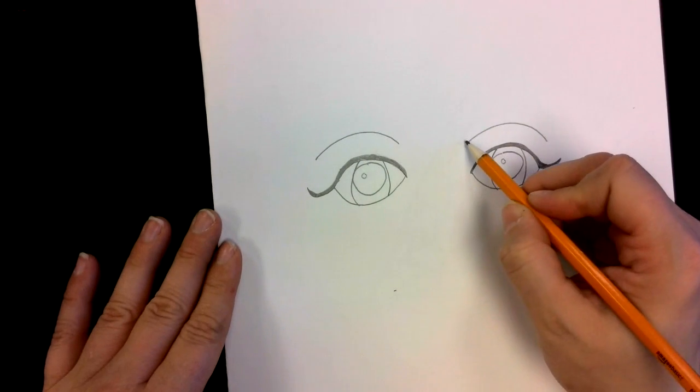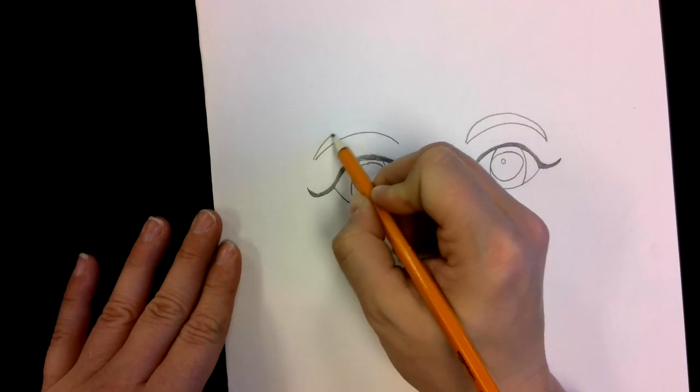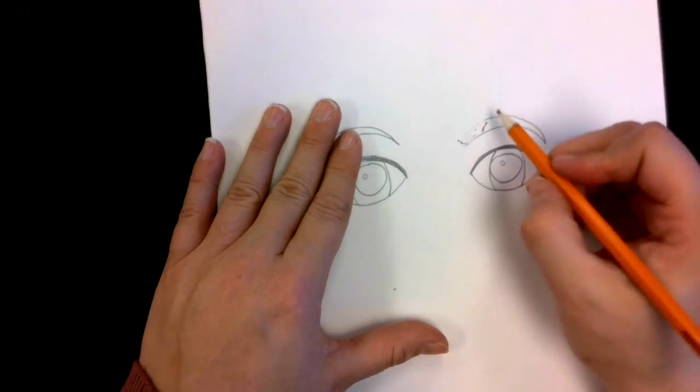To make them look like actual eyebrows instead of just curved lines, I'm going to draw another curved line right on top of that. I'm going to fix this one to make it a little bit more pointed.